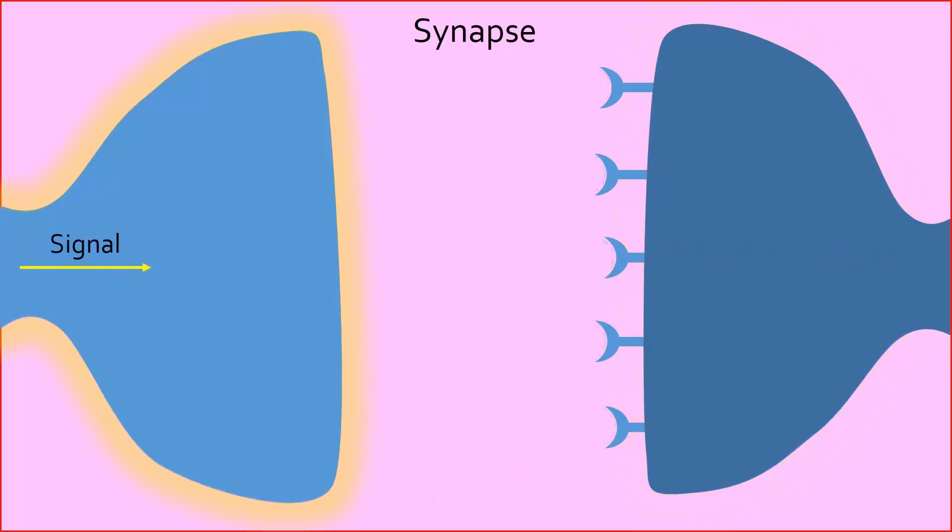Release of a different neurotransmitter or binding to a different receptor can instead cause inhibition of the next neuron, preventing the signal from continuing. Neurons are therefore either excitatory or inhibitory depending on whether they cause the next neuron to turn on or off. Different patterns of excitatory and inhibitory neurons allow all kinds of messages to be relayed from one part of the body to another.